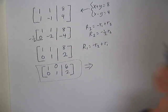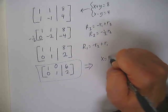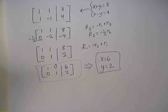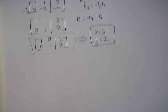And we've now put it in row echelon form, so now we just figure out the solution from that, and it would be x equals 6, and y equals 2. That was another fairly easy example.